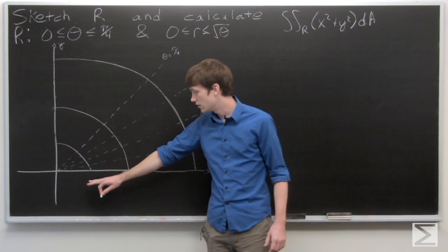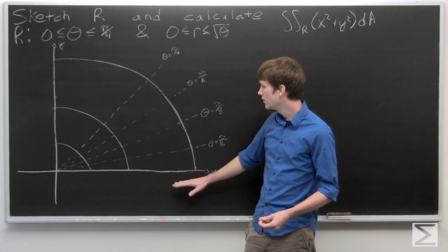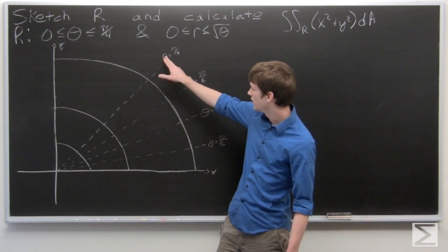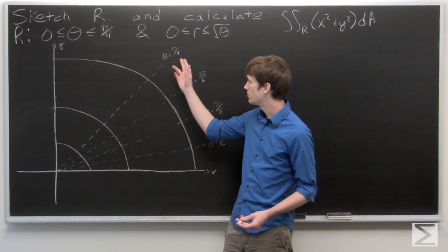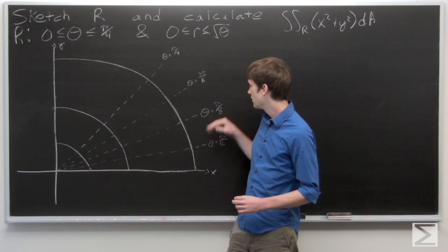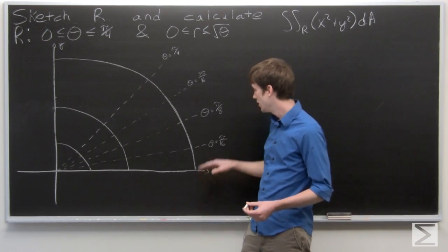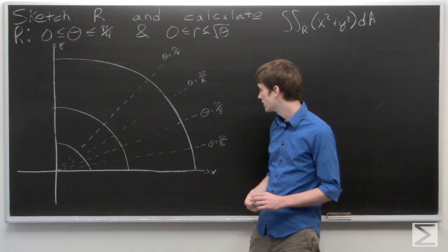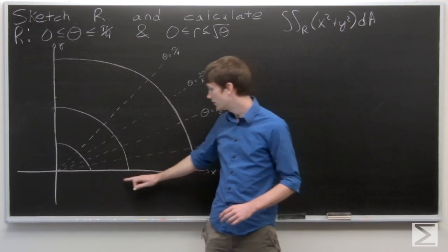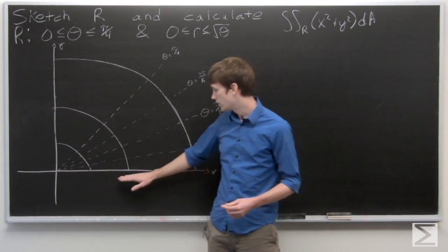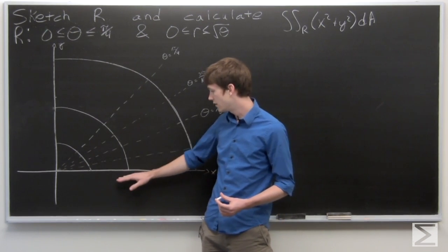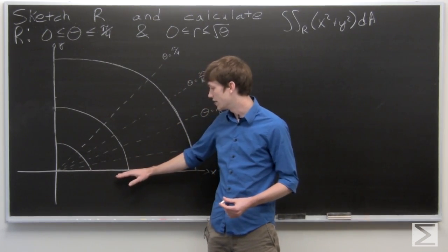I've given an xy-plane with some helpful markers already put on there. We have the top dotted line when theta is equal to pi over 4. The next one is when theta is equal to 3 pi over 16. The next one is when theta is equal to pi over 8. And our last one is when theta is equal to pi over 16. I've also drawn three circles in the first quadrant.